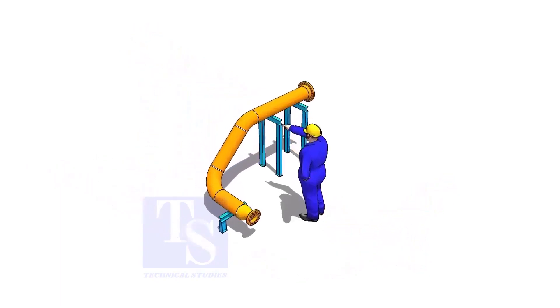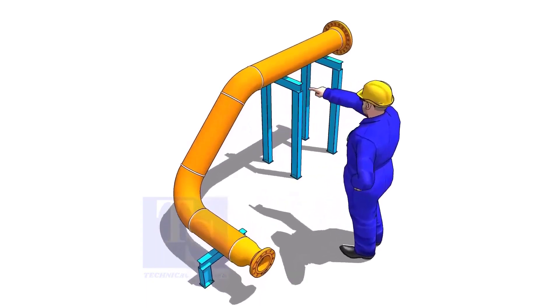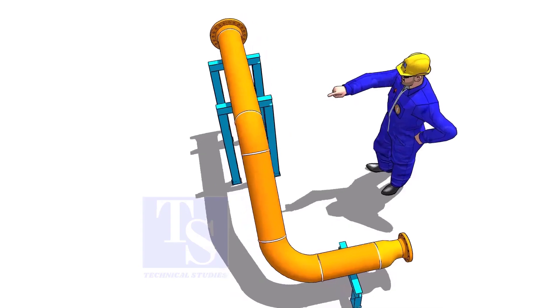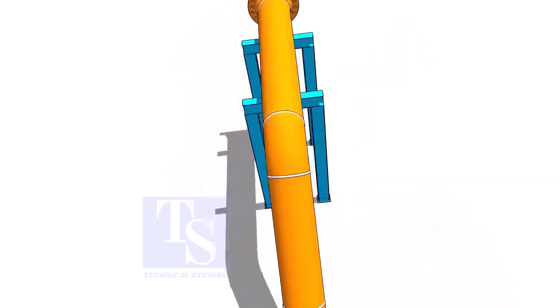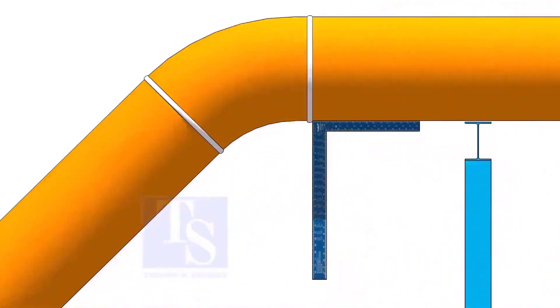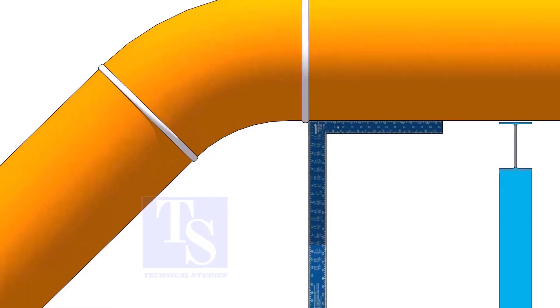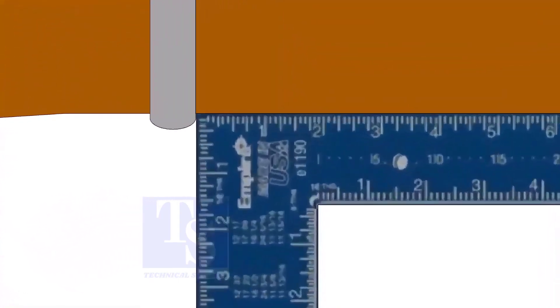Let us check the degree of the smaller elbow first. We need two pieces of large right angles for this job. Hold one right angle on the pipe just outside the weld joint, as shown.